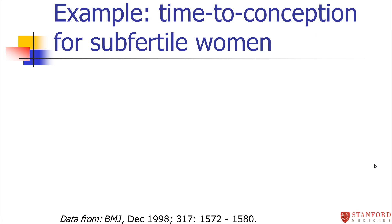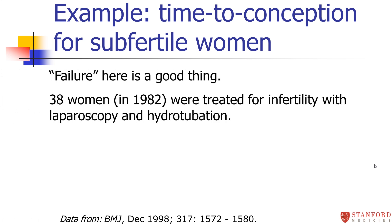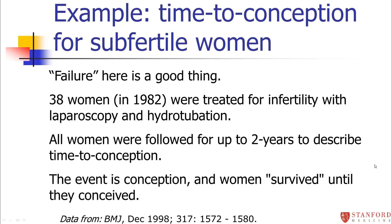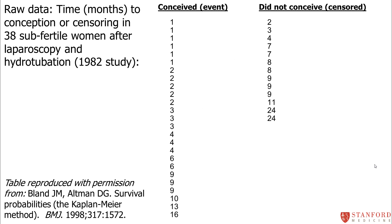Let me go through a real example of a Kaplan-Meier curve. We're going to look at a single curve for one group of women — time to conception for women who are trying to get pregnant and are having trouble. The event is a good thing here. There were 38 women treated for infertility with a certain treatment, followed for up to two years. We're starting with 100% of women not being pregnant, and women survive until they conceive. Here's all the data — women who had the event, women who did not, and the timing.